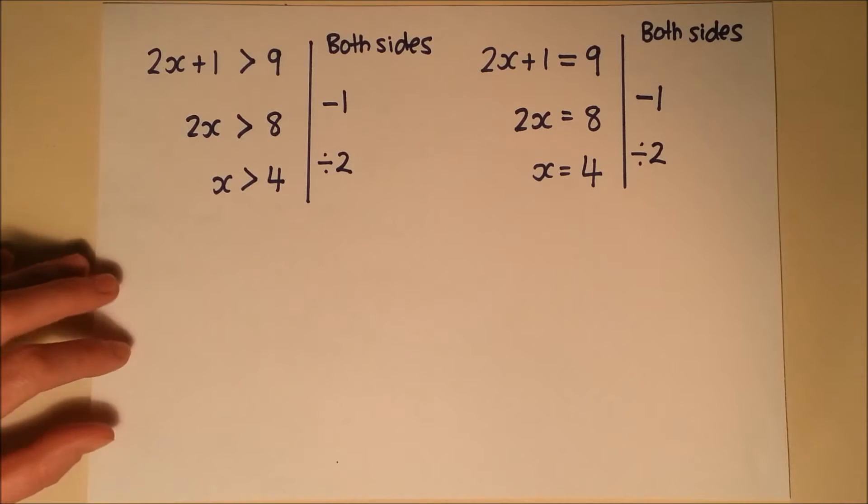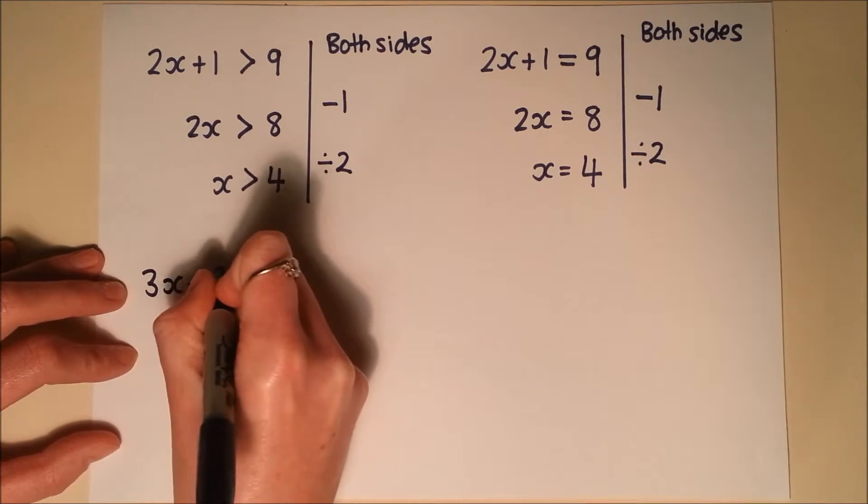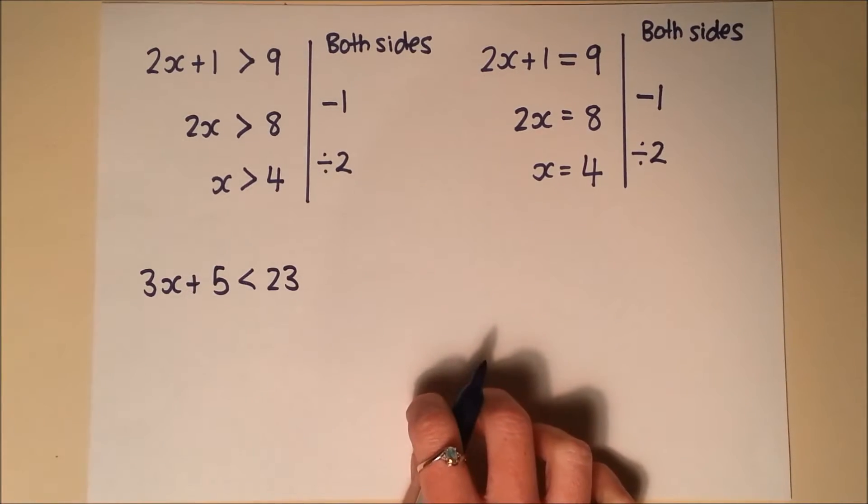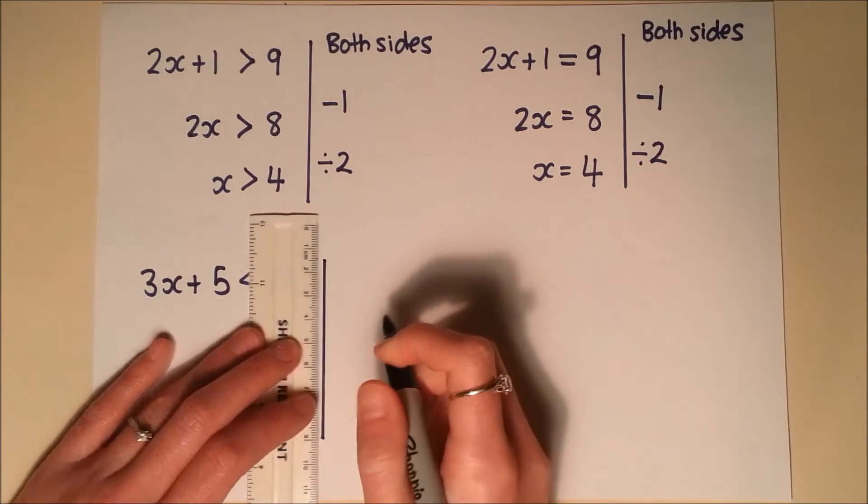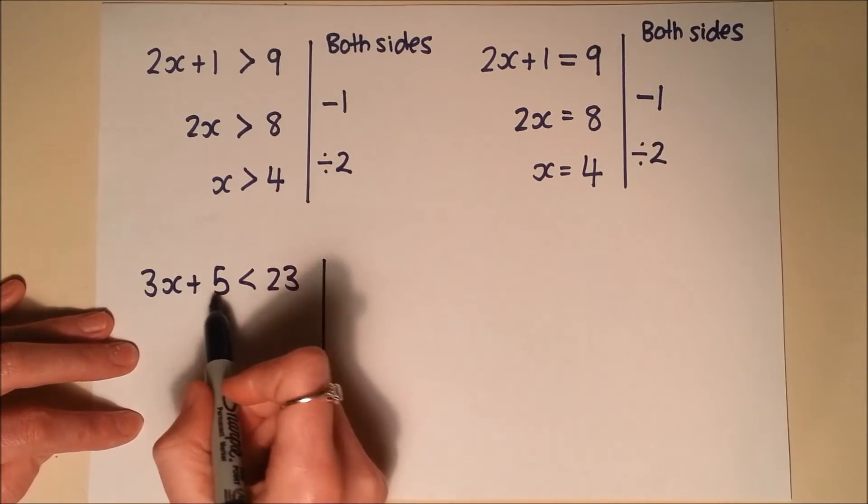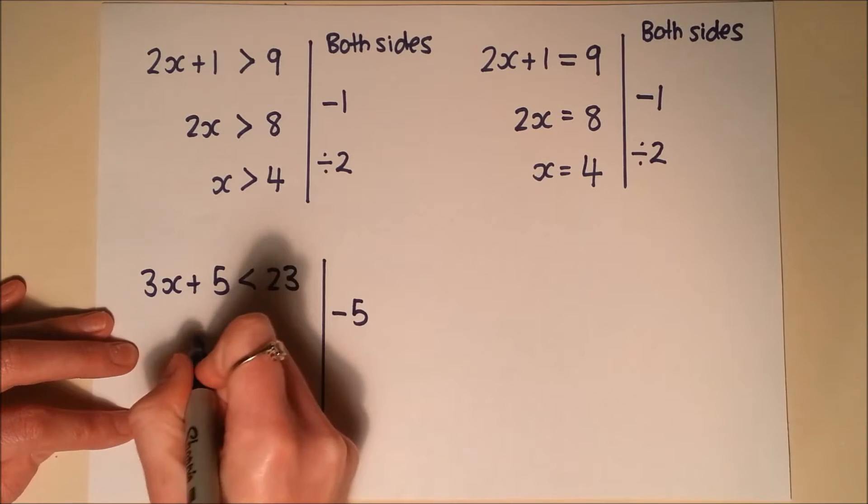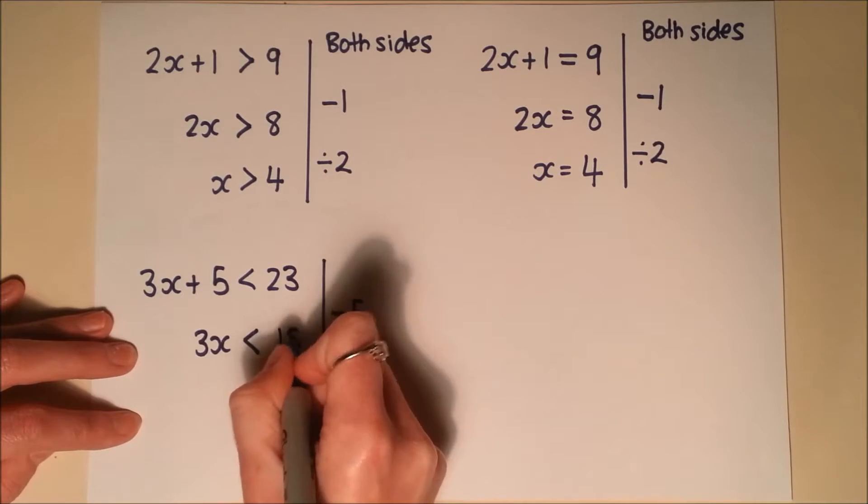Okay, let's have a look at another one. So 3x plus 5 is less than 23. Different symbol, but same process. So the first thing I'm going to do is subtract the 5 from both sides. Which leaves me with 3x on the left hand side. And 23 minus 5 gives me 18 on the right hand side.